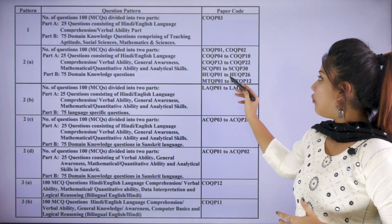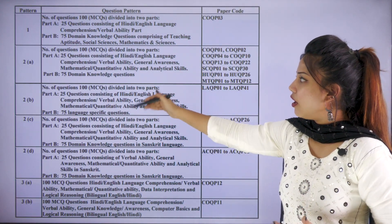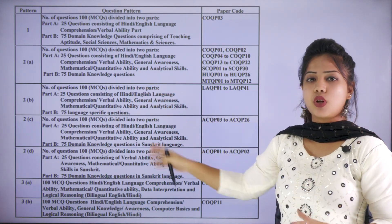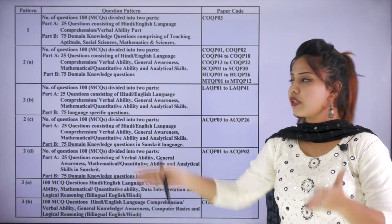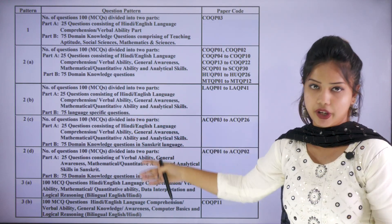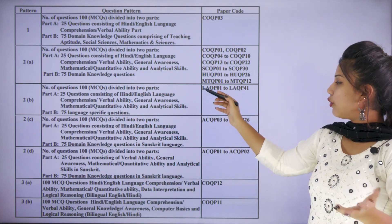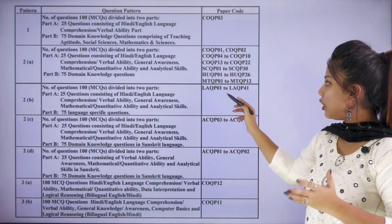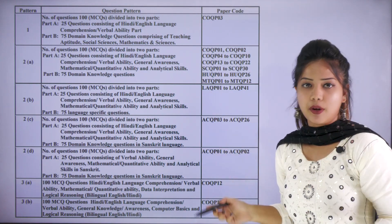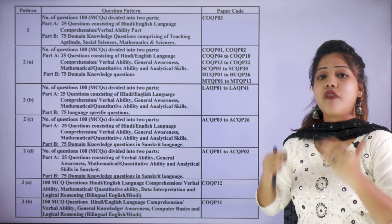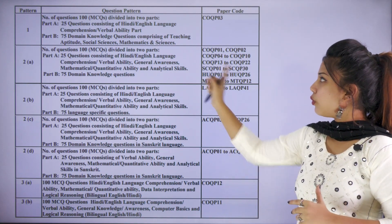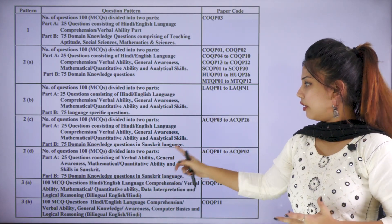For these paper codes, Part A again comprises 25 MCQs and Part B comprises 75 MCQs within your domain knowledge questions. MTQP01 to MTQP12 are usually for doing your M.Tech programs. Find out your paper code and know which category you come under.